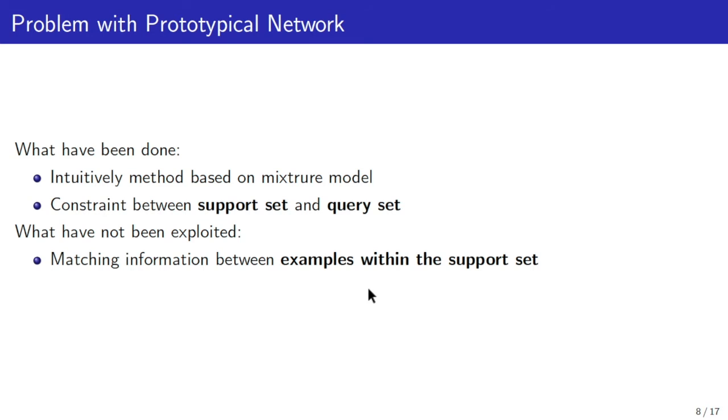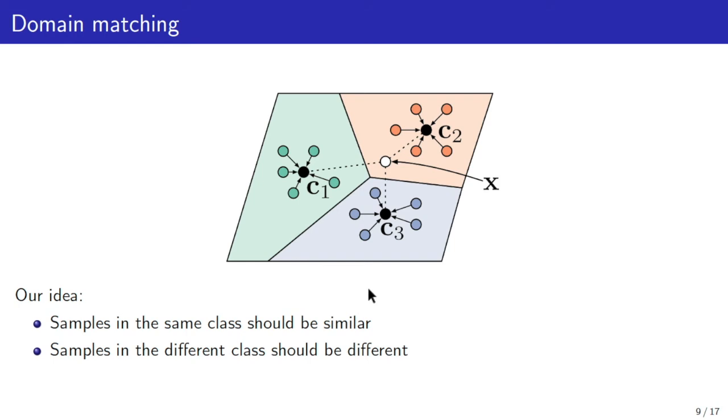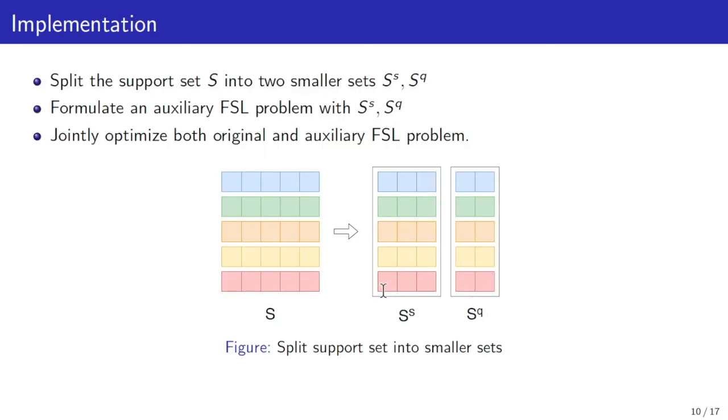Therefore, we propose to exploit the matching information in the support set. Our hypothesis is that the examples in the same class should distribute close to each other, whereas the instances in different classes should spread far away from each other. In order to do so, we exploit the support set and aim to form an auxiliary few-shot learning problem using the support set. Since the support set contains k instances per class, we split them into two parts SS and SQ. The SS stands for the support set and the SQ stands for the query set of the auxiliary problem.